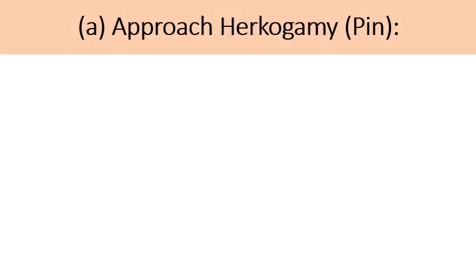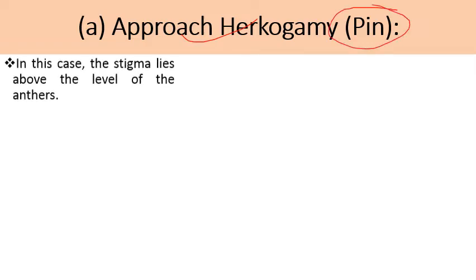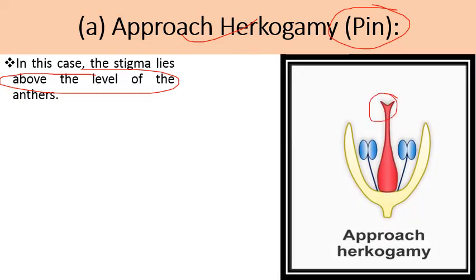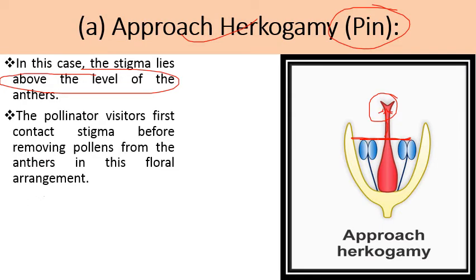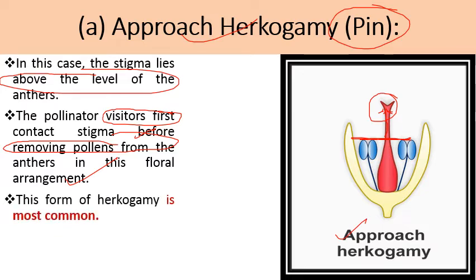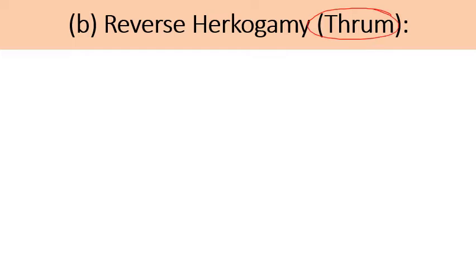Herkogamy is of two types. The first is approach herkogamy, also known as pin flower. Here the stigma lies above the level of the anthers — the stigmatic surface rises above the anthers' level. The pollinator visitor first contacts the stigma before removing pollen grains from the anthers, which is an adaptation to ensure cross pollination. Approach herkogamy is the most common type found in plants.